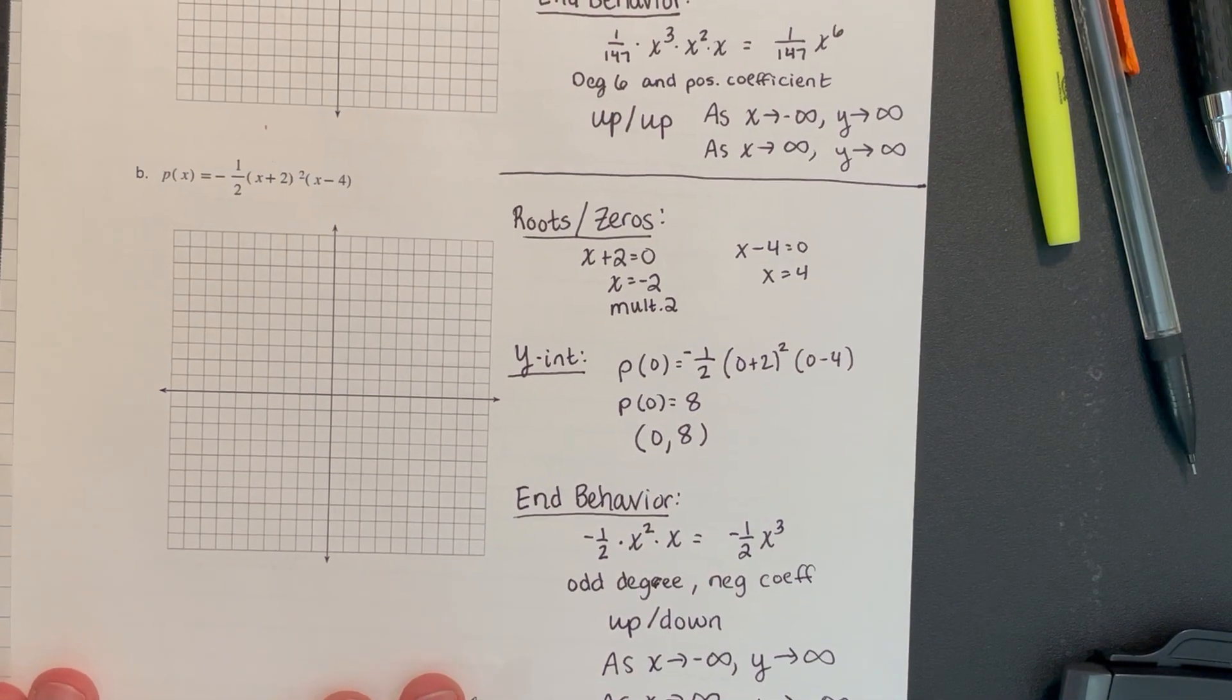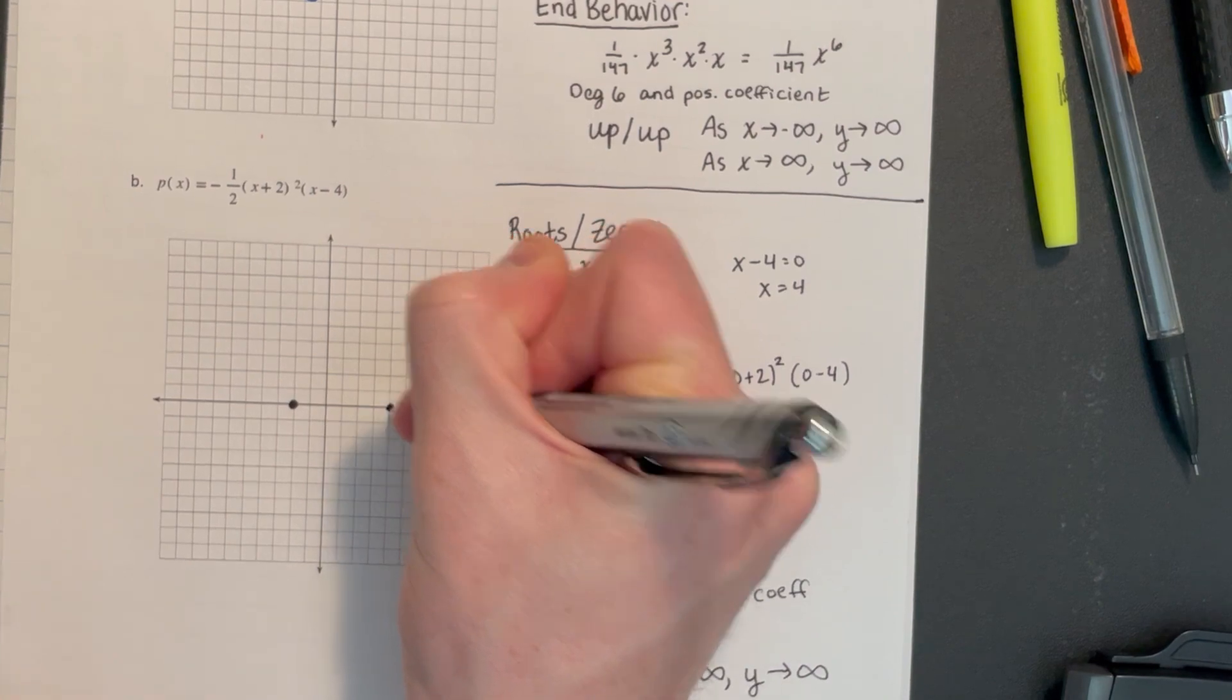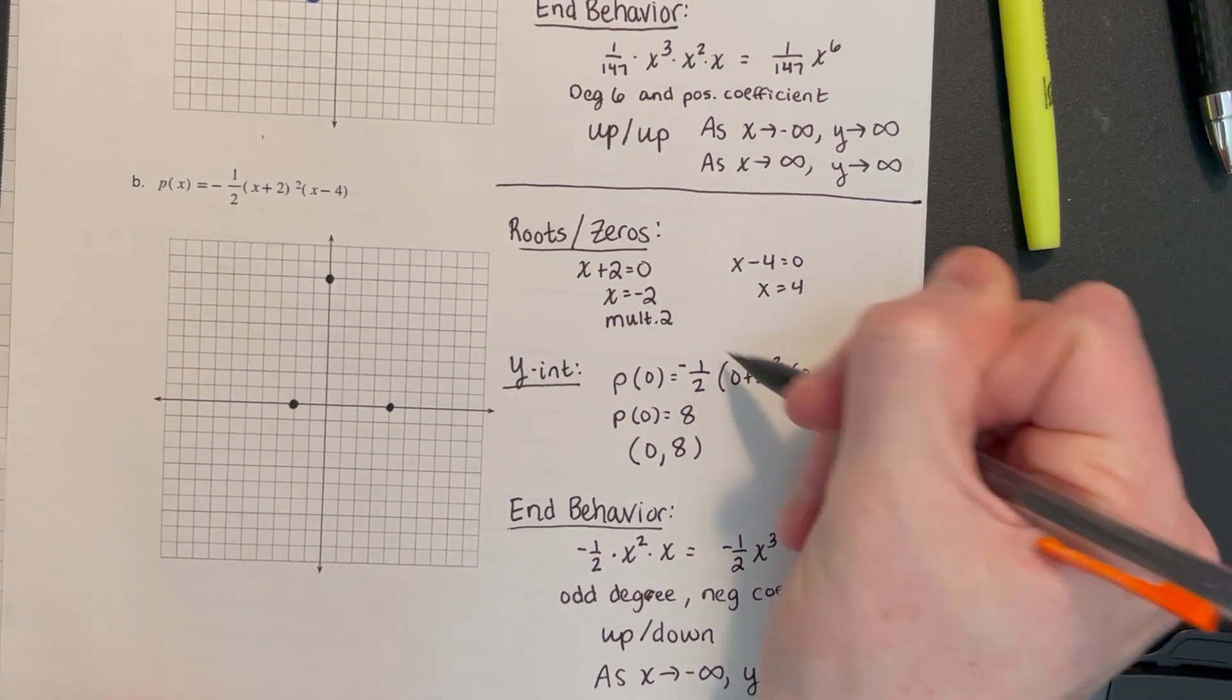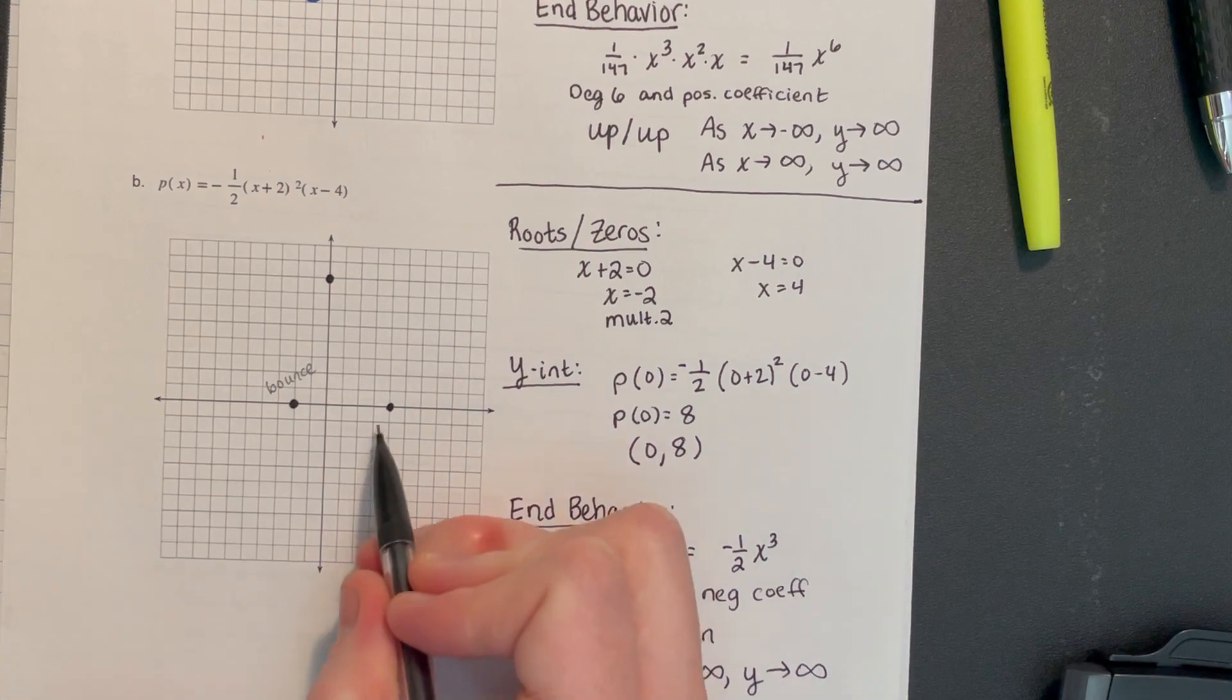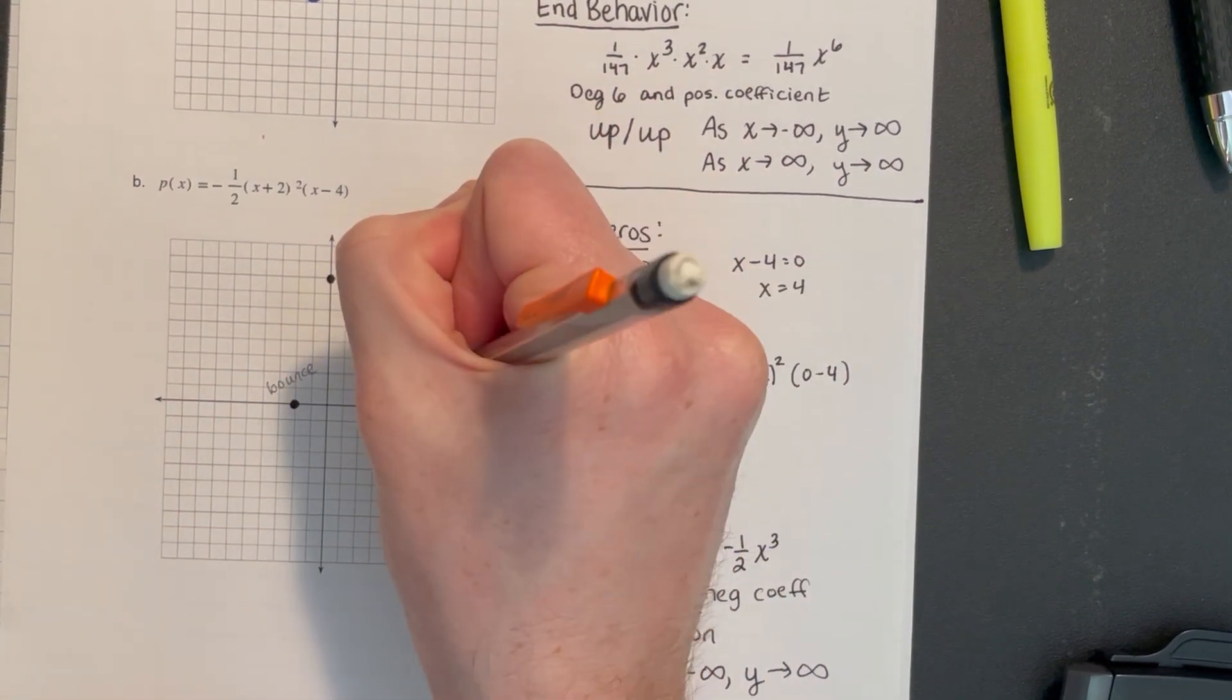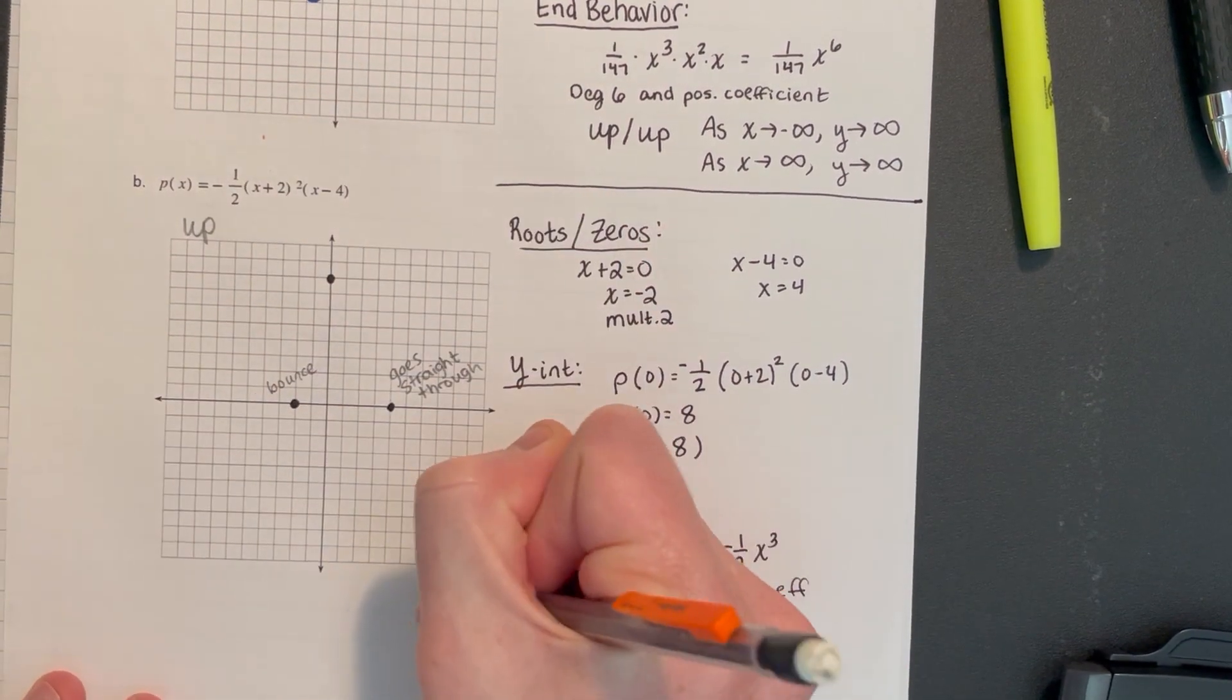Let's plot some of these points. We've got an x-intercept at -2, an x-intercept at positive 4. We have a y-intercept at 8. We know that it's going to bounce off the x-axis at -2. But it goes straight through positive 4. This is just to help give me a reminder of what's going on, what direction I need to go. We're going up on the left and down on the right this time.